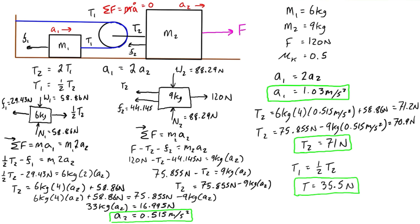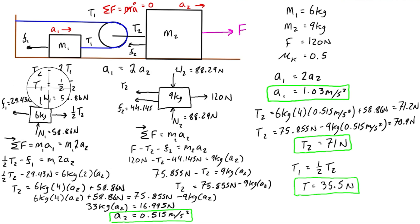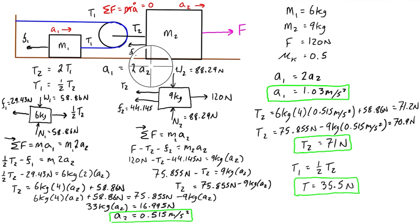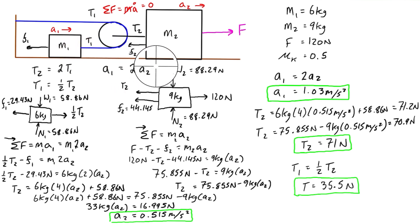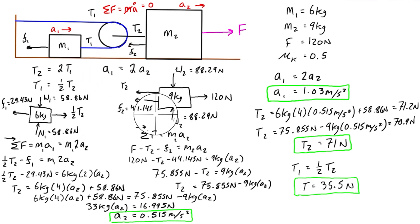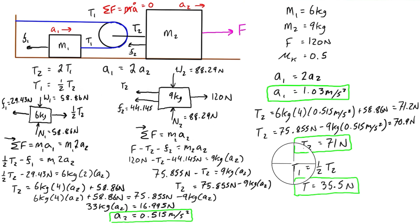So we've found the acceleration of each block and the unknown tensions in each cable. Be careful with moving pulley problems — the trickiest part is getting the acceleration relationship correct, which requires careful reasoning. I recommend making up a displacement to figure out which block moves further and by how much. Also ensure you express everything in the same terms (either A1 or A2, and T1 or T2) across both free body diagrams.